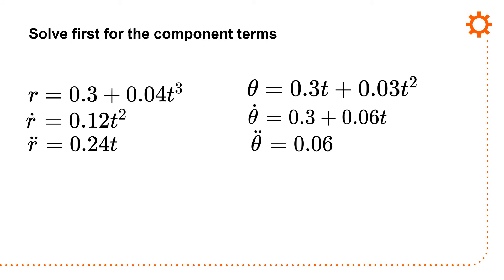I'm going to solve for it in component terms using the standard set of equations for acceleration R, acceleration theta, velocity R, and velocity theta. So: R equals 0.3 plus 0.04t³; R-dot is 0.12t²; R-double-dot is 0.24t. For theta: theta equals 0.3t plus 0.03t²; theta-dot is 0.3 plus 0.06t; and theta-double-dot is 0.06.